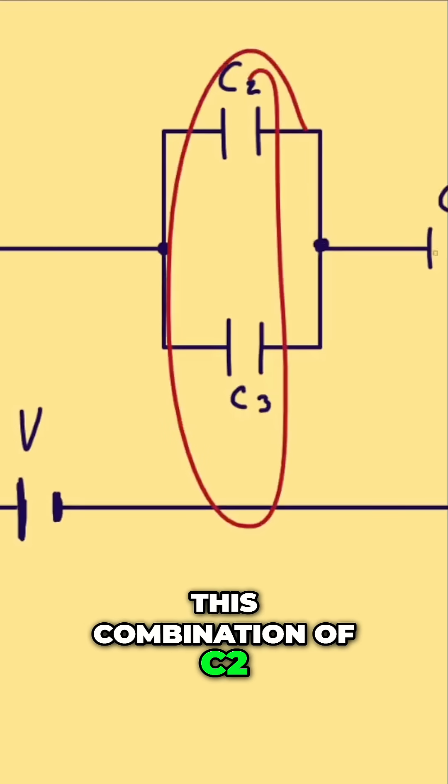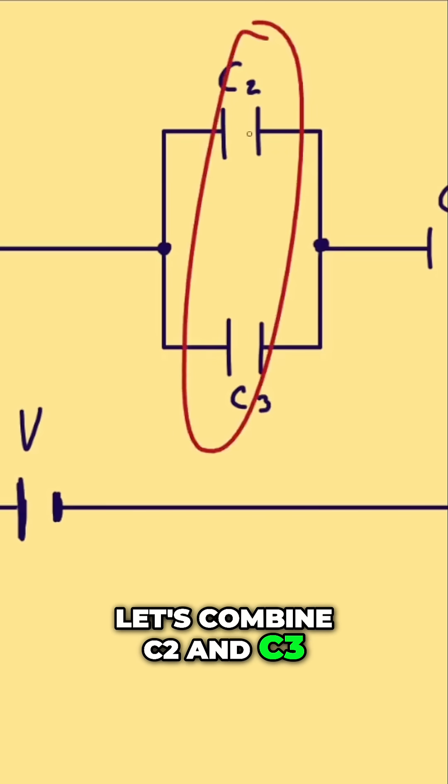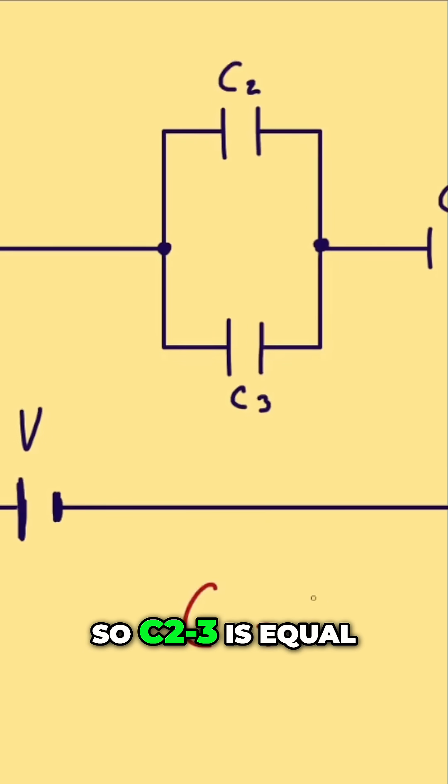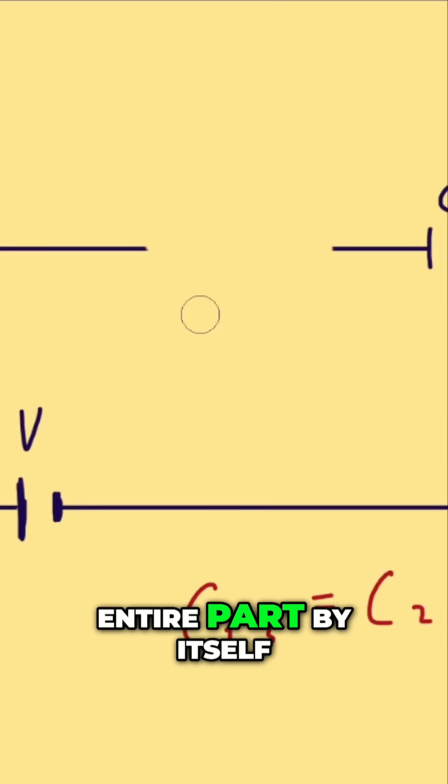This combination of C2 and C3 are connected in series with C1. So let's combine C2 and C3. C23 is equal to C2 plus C3. That's the equivalent capacitor which can represent this entire part by itself.